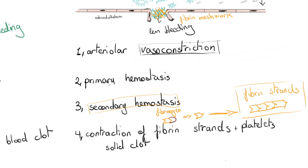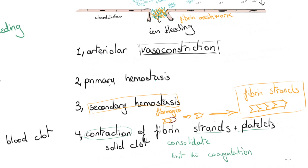Eventually, the fibrin strands and platelet aggregation contract to further consolidate the clot. In the fourth step, we also limit coagulation and clot formation so that we wouldn't stop blood flow entirely by forming too large a clot.